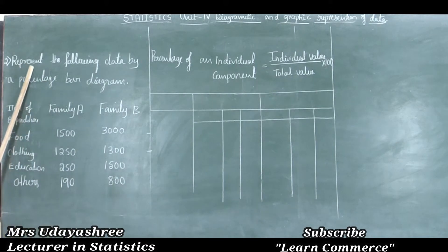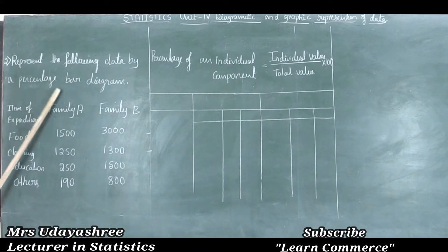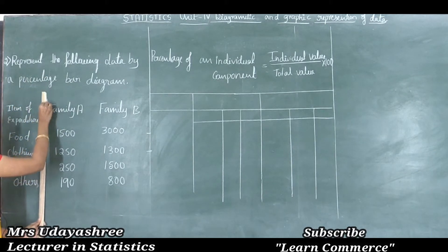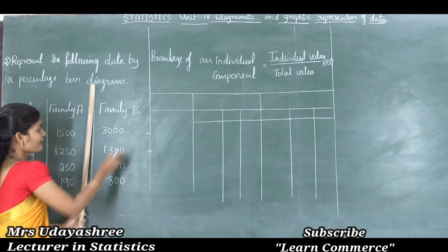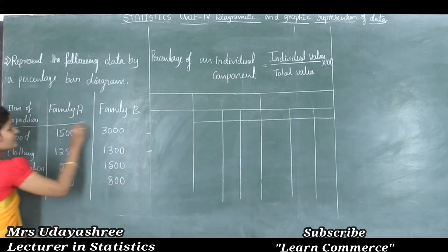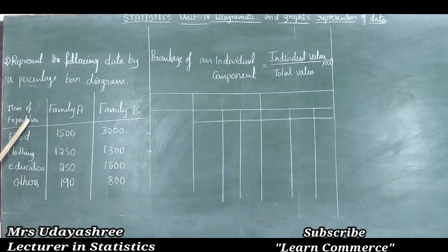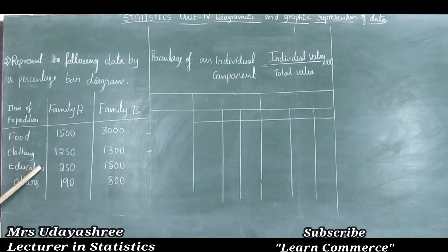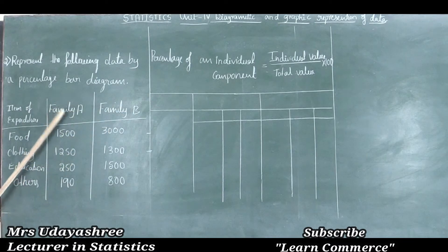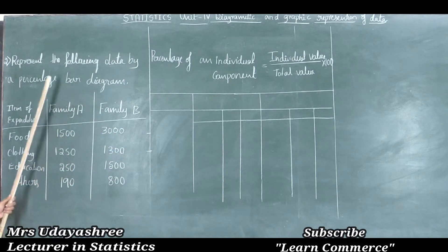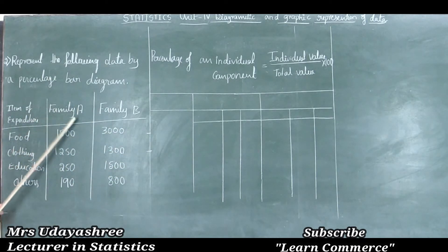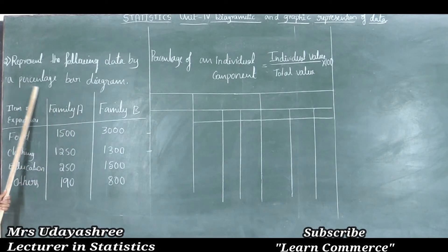The given question is: represent the following data by a percentage bar diagram. The given information includes item of expenditure, family A, and family B. The items are food, clothing, education, and others. The expenditures for two families — family A and family B — are provided. Using this information we need to draw a percentage bar diagram.